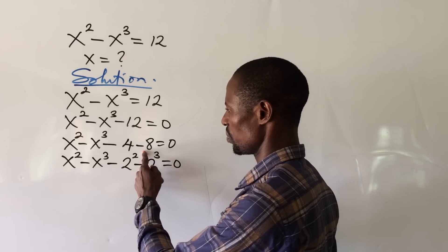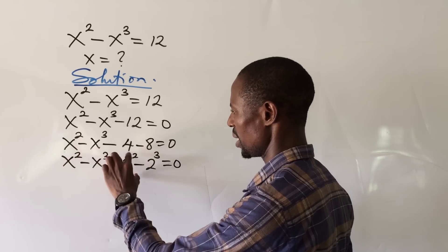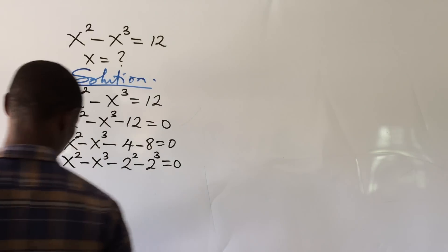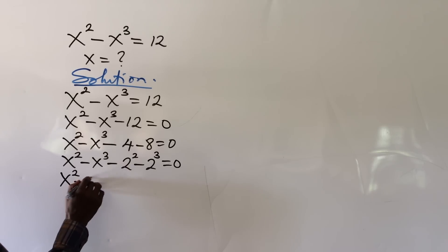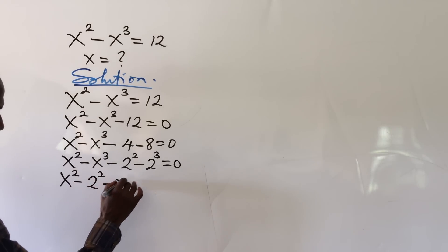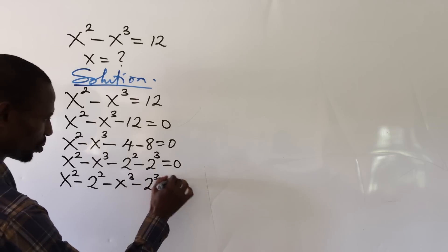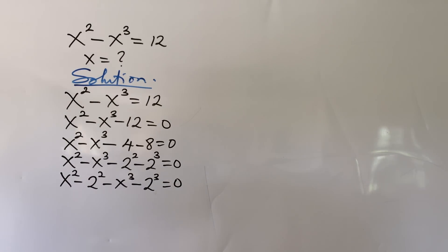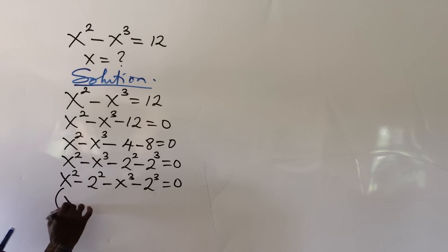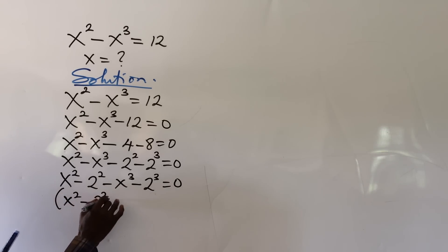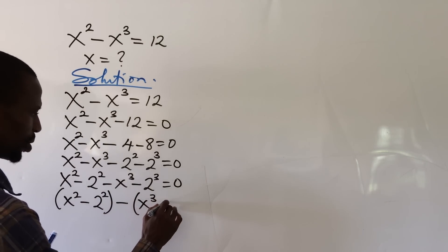So we now have x to the power of 2 minus x to the power of 3 minus 2 to the power of 2 minus 2 to the power of 3 equal to zero. We bring x squared and 2 squared together, and x cubed and 2 cubed together, giving us: bracket x to the power of 2 minus 2 to the power of 2, close bracket, minus bracket x to the power of 3 minus 2 to the power of 3, close bracket, equal to zero.